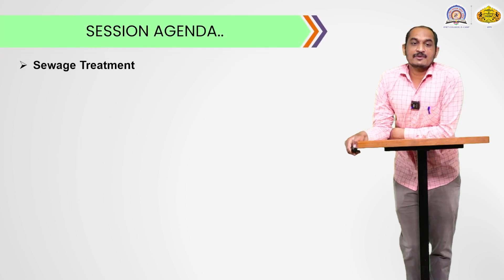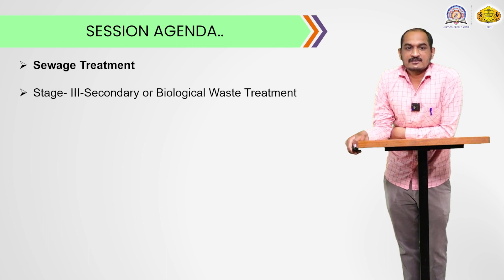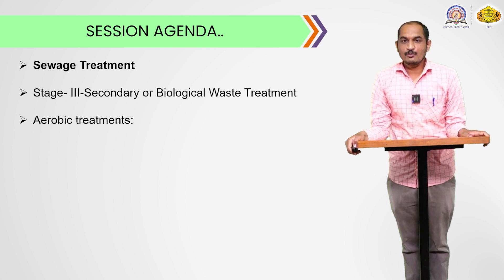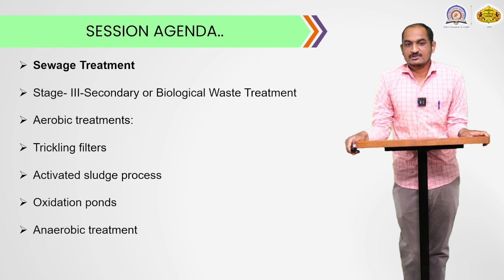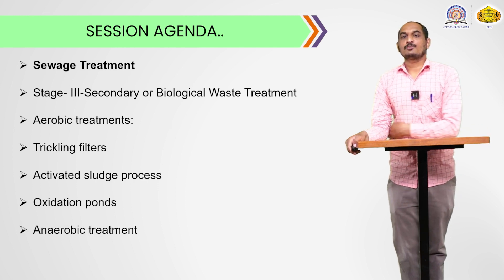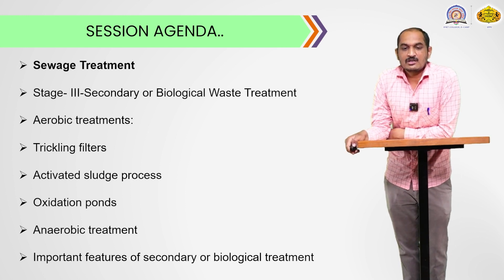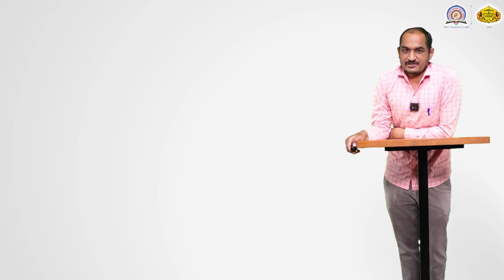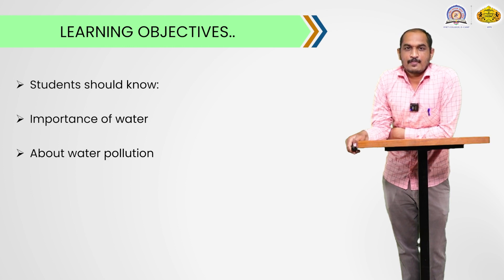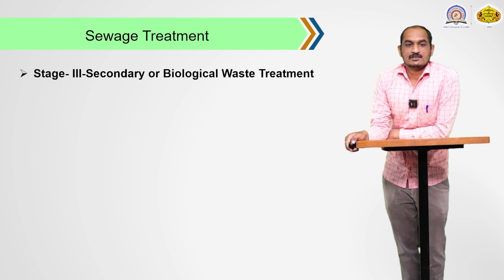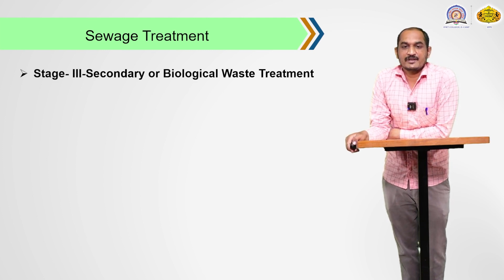Today we continue the sewage treatment and discuss stage number 3, that is the secondary or biological waste treatment in detail. In that, we discussed aerobic treatment, trickling filters, activated sludge process, oxidation ponds, and anaerobic treatment. At the end of this session, we also discussed the important features of secondary or biological treatment. The learning objective is that after this session, students should know about the importance of water, water pollution, and the different wastewater treatments.